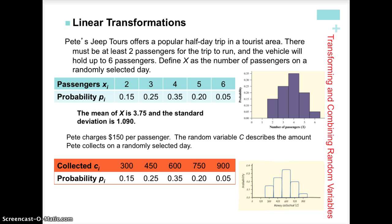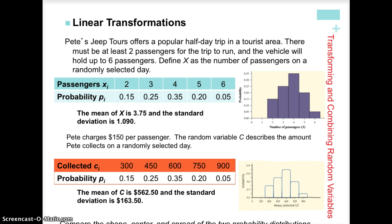The frequency is the same because the probability is the same, but the axis values along the horizontal are different because the first time we're looking at number of passengers and the second time we're looking at money collected. We can calculate the mean and standard deviation, and we notice that both the measure of center and the measure of spread have changed — by multiplying by 150 for $150 per passenger.